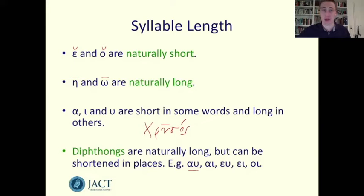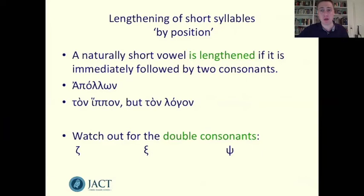A short vowel becomes long if it is directly followed by two consonants. For example, in the Greek word for the god Apollo — Apollon — the omicron is short by nature but it becomes long by position because it is followed by two consonants.